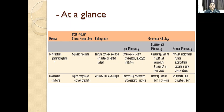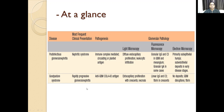At a glance of what we have done: post-infectious glomerulopathy, nephritic syndrome pathogenesis — immune complex mediated with circulating or planted antigen. Light microscopy: diffuse endocapillary proliferation, leukocytic infiltration. Immunofluorescence: IgG and C3 deposits in the GBM and mesangium, granular IgA in some cases. Electron microscopy: subepithelial humps and subendothelial deposits in early stages.